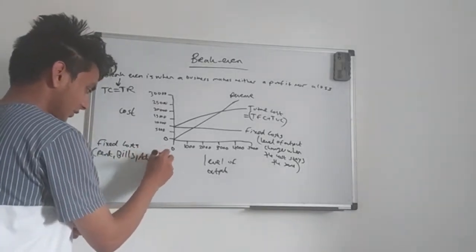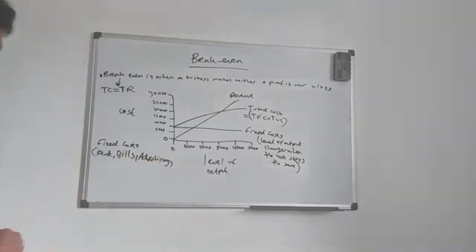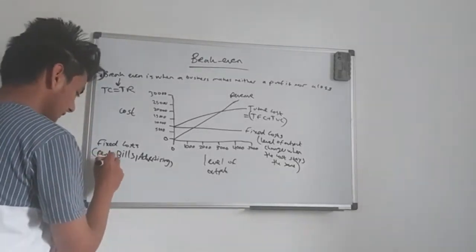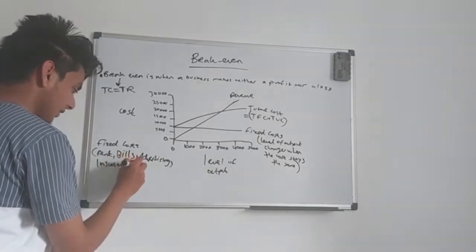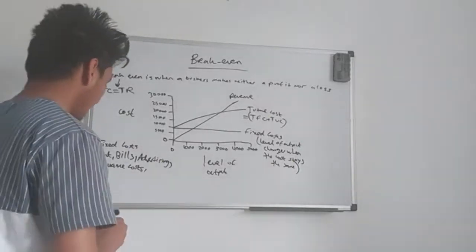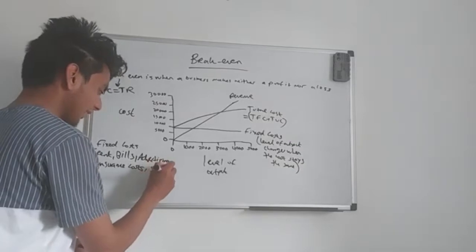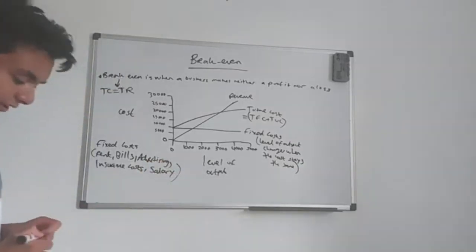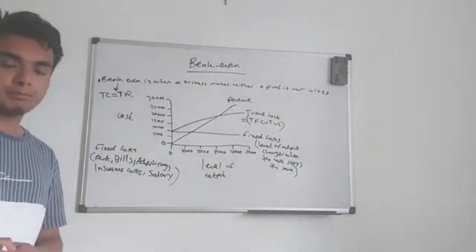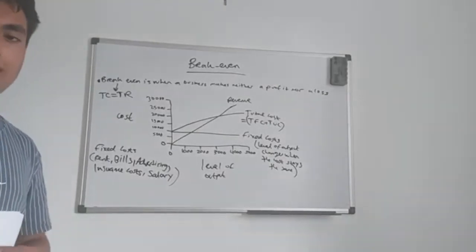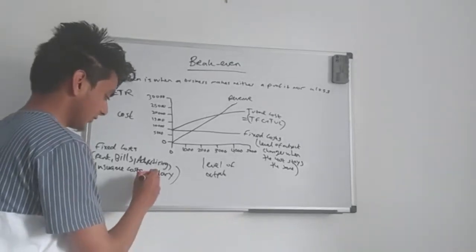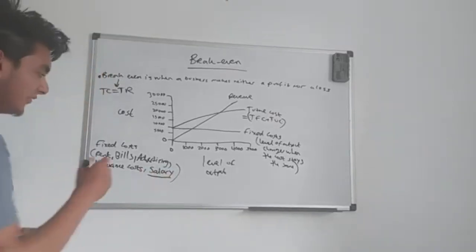Advertising is the third one. The cost of advertising a product or trying to promote it will stay the same. Insurance costs is another one. So you getting a driving license, for example, that will stay the same. And finally, salary. Salary is a very big one. Salary is the amount a worker gets paid per hour. And that stays the same. So those are examples of fixed costs.